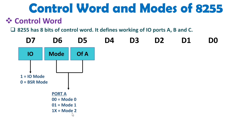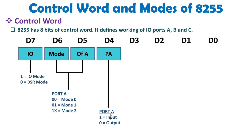D4 bit is there regarding port A, defining whether port A is in input mode or output mode. Mode 0, mode 1, and mode 2 define what kind of mode is active, but whether port A is input or output is defined by this D4 bit.